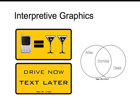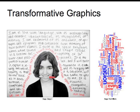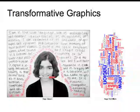Interpretive graphics display ambiguous or abstract information or provide graphic examples of concepts. They may do this by means of metaphor or by taking advantage of the relationship between a concept and a physical property. Transformative graphics make content memorable and promote thinking about the content. These graphics work on long-term memory by using visual analogy.